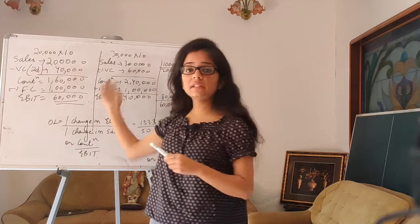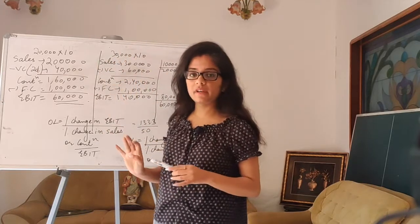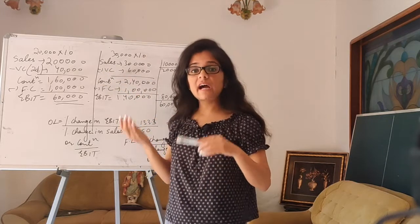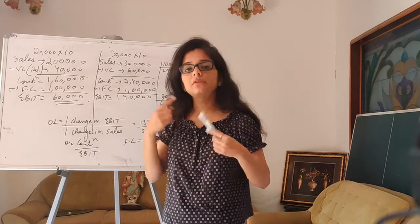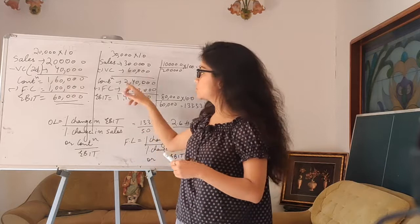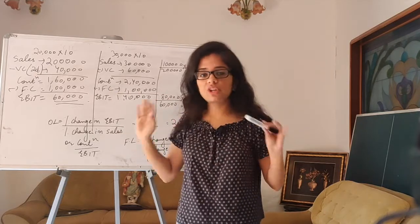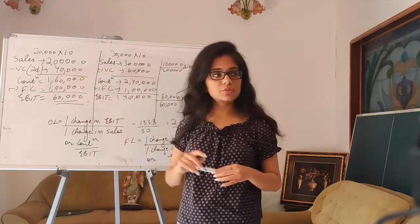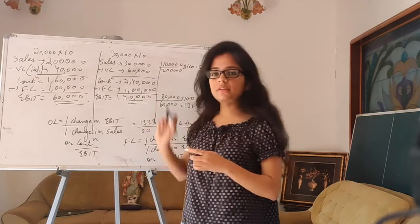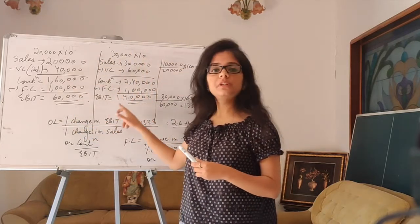Now suppose my sales increases from 20,000 units to 30,000 units. At 30,000 units, my sales comes out to 3 lakh rupees. The variable cost is directly proportional to sales, so as sales increase, variable cost increases. Variable cost is 20% of 3 lakh, which is 60,000 rupees. Contribution comes out to 2 lakh 40,000 rupees. Fixed cost remains constant — it does not change regardless of sales — so it stays at 1 lakh. Therefore EBIT comes out to 1 lakh 40,000 rupees.